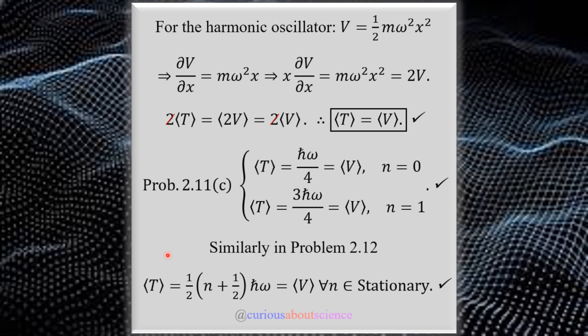And then similarly, we have the same result for 2.12, where the expectation of T was 1.5 and plus 1.5, and so 1.5 integer addition. ℏω, of course, omega oscillator. And that's just for all in the stationary states that we need.